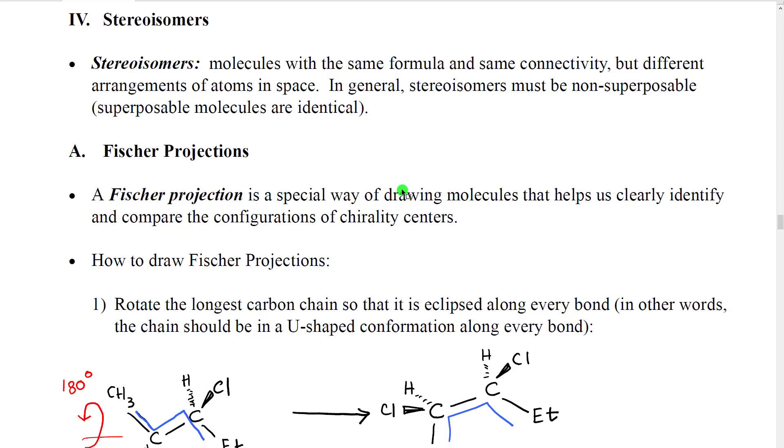In the next section we're going to discuss stereoisomers. Stereoisomers are molecules that have the same formula and same connectivity but they have different arrangements of atoms in three-dimensional space. In general, what we're going to see is that stereoisomers must be non-superposable. Superposable molecules are going to be identical.